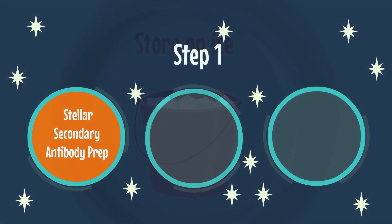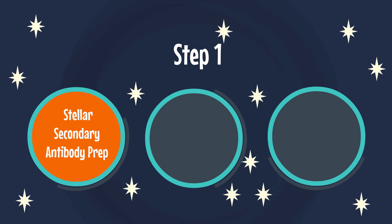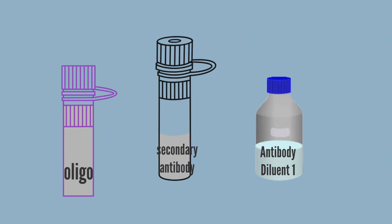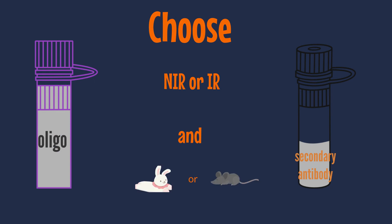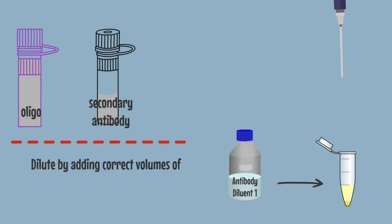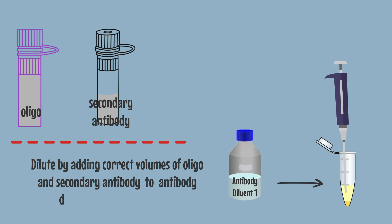Step 1: Stellar Secondary Antibody Prep. You will need Oligo Secondary Antibody and Antibody Diluent 1. Choose NIR or IR, and Rabbit or Mouse. Dilute by adding correct volumes of oligo and secondary antibody to Antibody Diluent 1 in a separate tube.